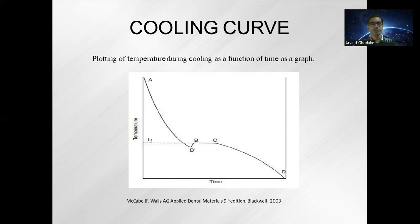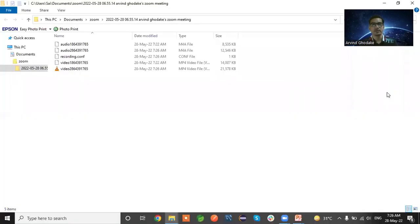From B to C, temperature remains constant. The first solid forms at point B, which is the solidification start point, and solidification is completed at point C. After that, in region C to D, cooling continues with further grain growth and refinement of grains occurring between C and D.